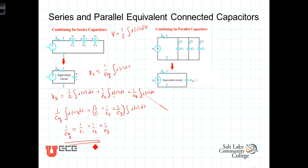That's what we're looking for. The equivalent combination of capacitors connected in series can be found by: the inverse of the equivalent capacitance is equal to the sum of the inverses of each of the capacitances. You'll notice that mathematically, series capacitors combine in the same way that parallel resistances combine.